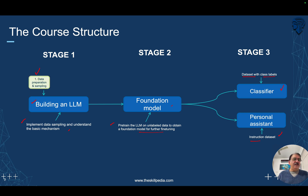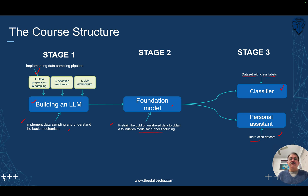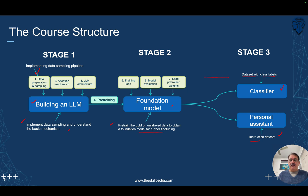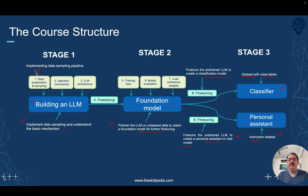Stage one will be implemented in three labs. Lab one covers implementing the tokenizer, data preparation, and sampling. Lab two implements the attention mechanism. Lab three creates the complete model architecture. Lab four covers pre-training on unlabeled data. Lab five handles the training loop, model evaluation, and loading pre-trained weights. Stage three covers fine-tuning: Lab nine fine-tunes the LLM for a classification model, and also creates a personal assistant or chat model.